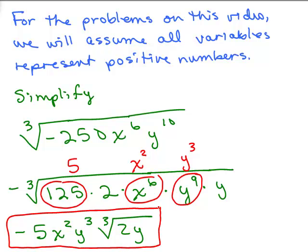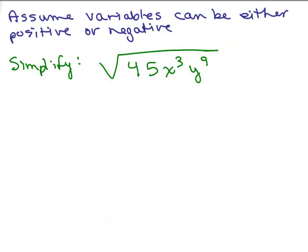The only thing we did differently in this video is do some problems where we have minus signs under the cube root and realize that if you did not assume the variables were positive, you'd have to deal with absolute value. Let's do one problem like that. We're going to assume variables can be either positive or negative. I have to look inside the radical and see if there are perfect square factors.